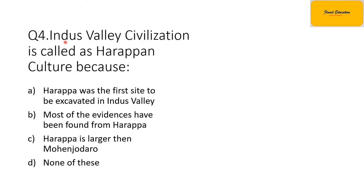The fourth question is: Indus Civilization is called Harappa culture because — the option is that Harappa was the first site to be excavated. The correct option is option A. The Indus Valley Civilization is also referred to as Harappan culture for this reason.